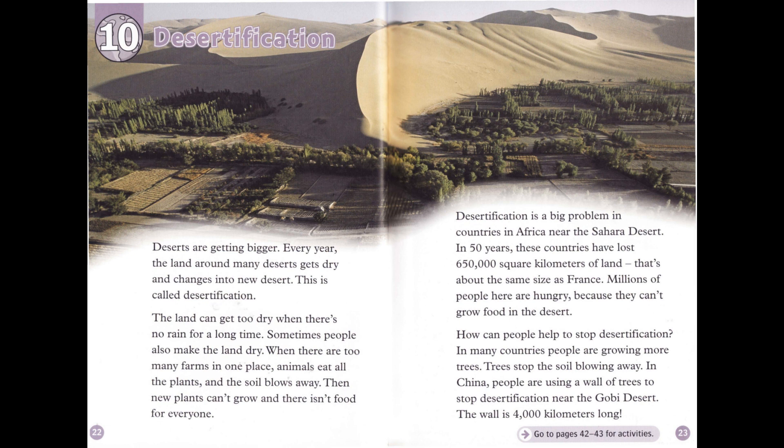Millions of people are hungry because they can't grow food in the desert. To help stop desertification, people in many countries are growing more trees — trees stop the soil blowing away. In China, people are using a wall of trees to stop desertification near the Gobi Desert. The wall is 4,000 kilometers long.